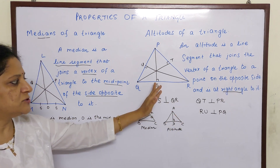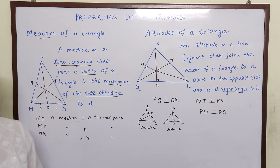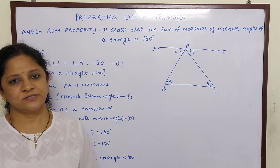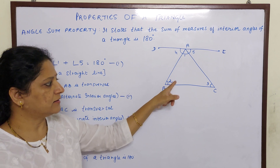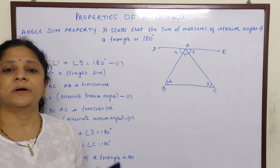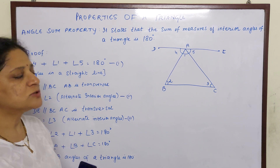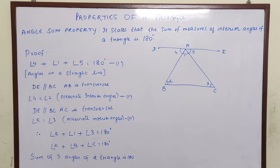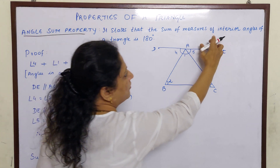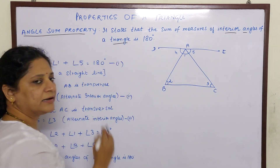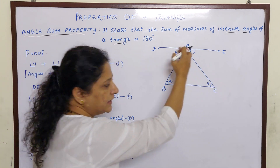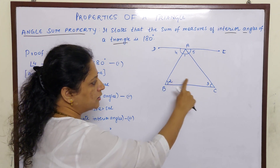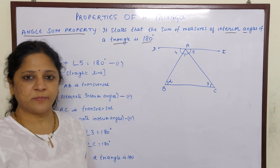Now let us learn the angle sum property. We will learn how the angles of a triangle equal 180 degrees. Whenever we add the sum of the angles of a triangle, it is 180. The angle sum property states that the sum of measures of interior angles of a triangle is 180 degrees. In triangle ABC, angle 1 plus angle 2 plus angle 3 is 180 degrees.